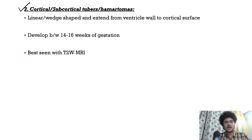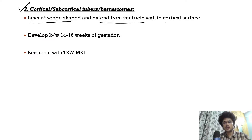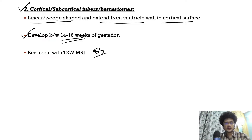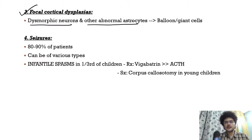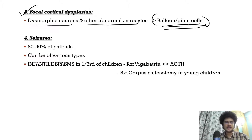Cortical or subcortical tubers are linear or wedge-shaped lesions extending from the ventricular wall to the cortical surface, developing between 14 to 16 weeks of gestation. They are best visualized with T2-weighted MRI. Focal cortical dysplasia, caused by dysmorphic neurons or abnormal astrocytes, is also present — the MCQ point here is the presence of balloon or giant cells.